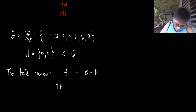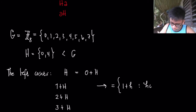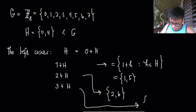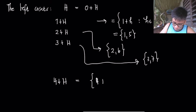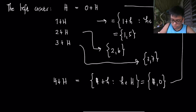I also have 1 + H, 2 + H, and 3 + H. So 1 + H = {1, 5}, 2 + H = {2, 6}, and 3 + H = {3, 7}. The reason we don't have 4 + H as a new coset is because 4 + H gives {4, 0} — adding 4 and 4 gives 0 — which is technically the same as H. So there are only 4 unique left cosets of H.